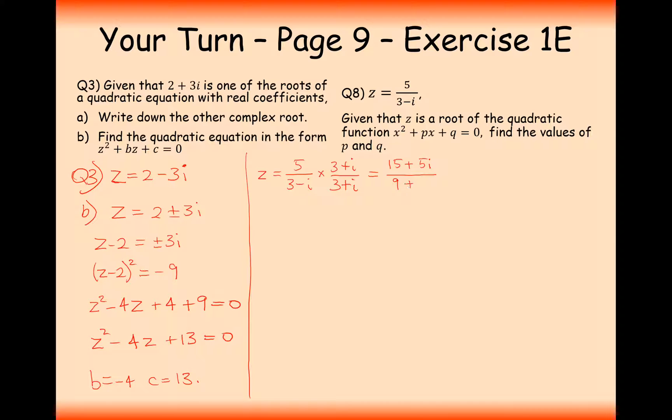So it's going to be 15 plus 5i on the top and it's going to be 9 minus 3i plus 3i plus 1. So this is going to be 15 plus 5i over 10. In this case, it's going to be 3 over 2 plus half i. So this is one of the roots of the quadratic. The second root is going to be 3 over 2 minus 1 half i.